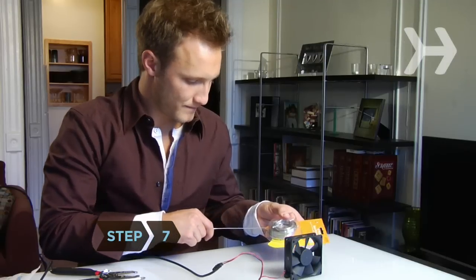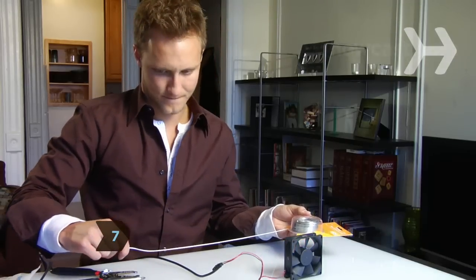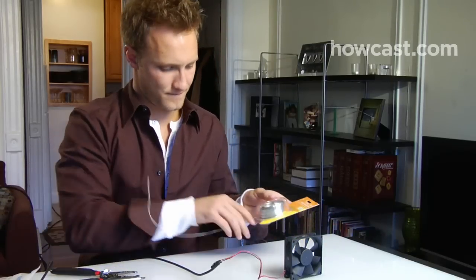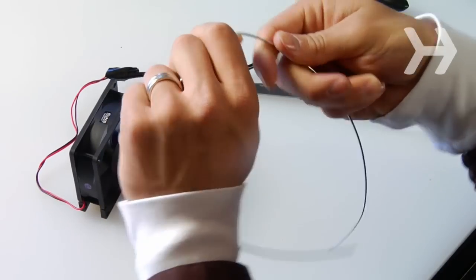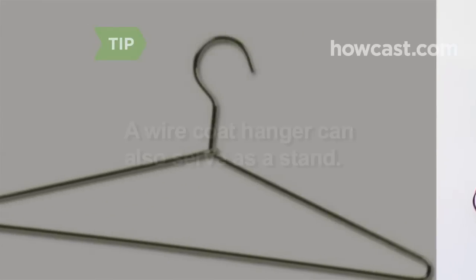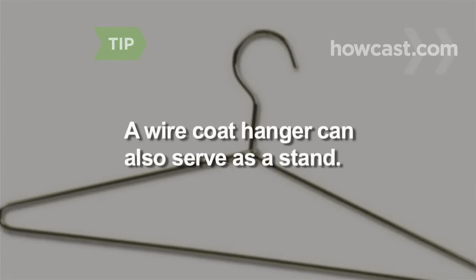Step 7. Create a stand for your fan. To start, get about 18 inches of sturdy electrical wire and bend it into a square U shape, the same width as the fan. A modified wire coat hanger can also serve as a suitable stand.